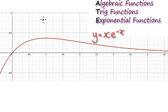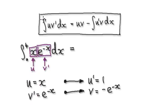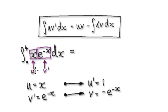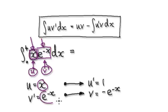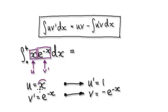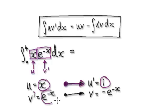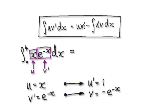Our normal routine: let u equal this thing here and v prime equal this thing here. So u equals x and v prime equals the exponential. If u equals x, then u prime equals 1. If v prime equals the exponential, then v would be this.